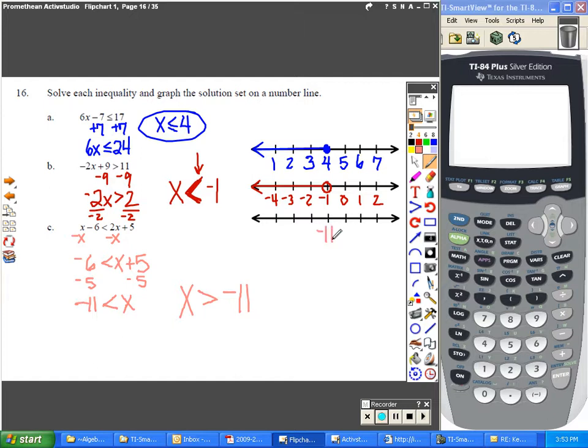So I put a negative 11 on my number line. I again have an open dot, because it doesn't include negative 11. Because this says greater than, I go towards the larger numbers.